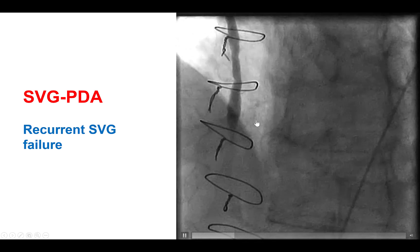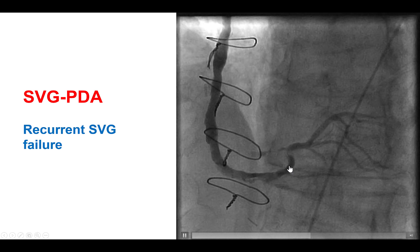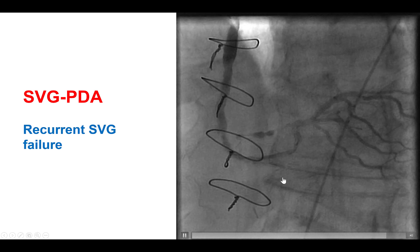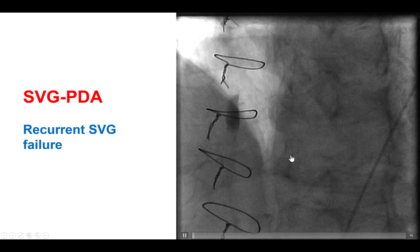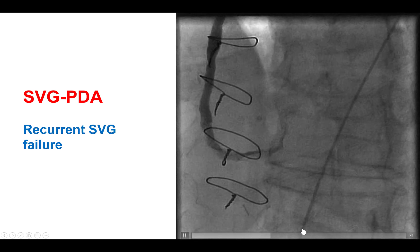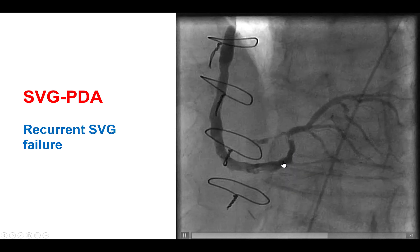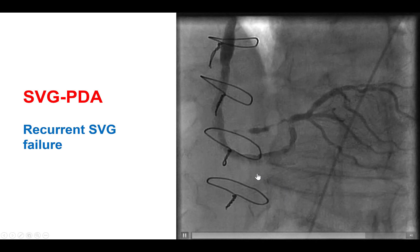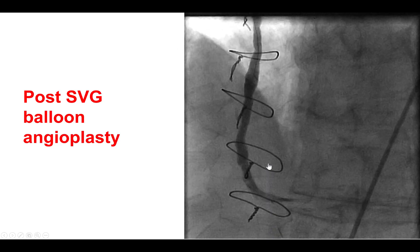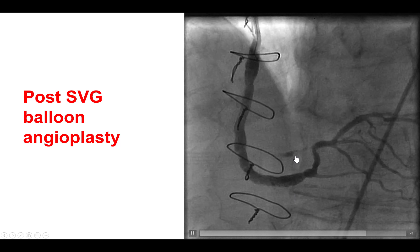This is a diagnostic angiogram showing that the saphenous vein graft has recurrent restenosis at the distal anastomosis. It actually extends into the native coronary artery. Given the multiple events and the multiple episodes of saphenous vein graft failure with this complex distal SVG lesion, the plan was to recanalize the native right coronary artery.